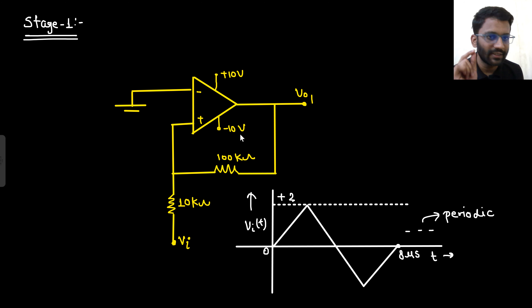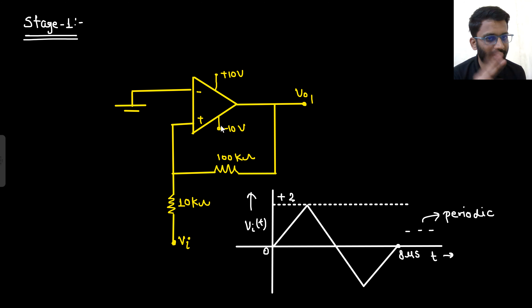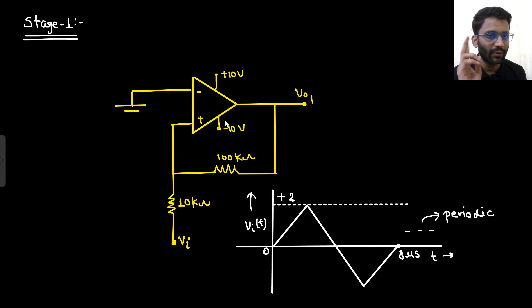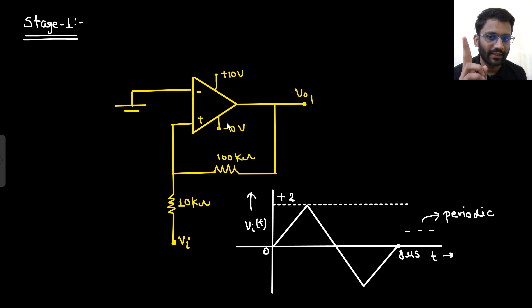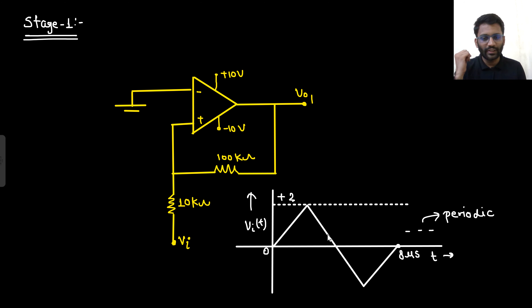In a Schmitt trigger, there is positive feedback involved. If there is positive feedback, there are only two possible outputs: plus V_sat and minus V_sat. In negative feedback you can have any output, but in positive feedback you can only have plus V_sat or minus V_sat - that means plus 10 or minus 10. So while solving a Schmitt trigger circuit, you always need to assume an output first.